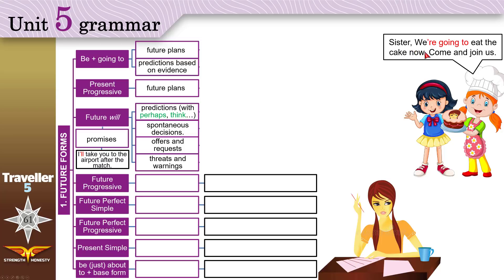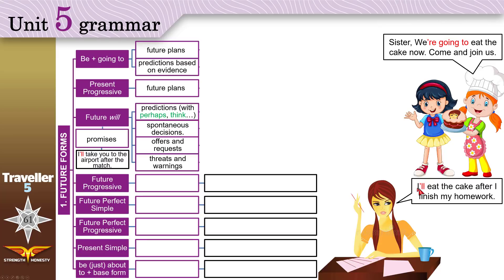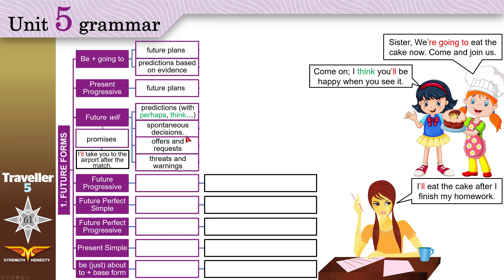"Sister, we're going to eat the cake now — come on, join us." This uses 'be going to' for a future plan decided a while ago, not on the spot. Then: "I'll eat the cake after I finish my homework." She decided just now — it's a spontaneous decision, so use 'will'. Finally: "Come on, I think you'll be happy when you see it." This is a prediction — not based on evidence — so use 'I think' with 'will'.